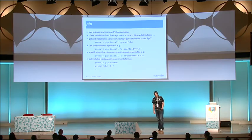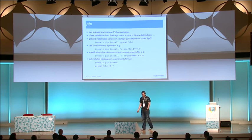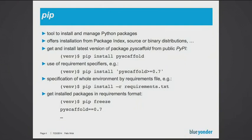A few words about pip — you probably all know it — this is just a tool to install and manage all your packages. It offers installation from the package index, whether local or global, or source or binary distribution. For example, to install the latest version of a package — in this case I just chose PyScaffold, which you will learn about in a few minutes — from the public PyPI, you just type pip install PyScaffold.